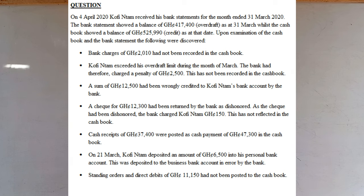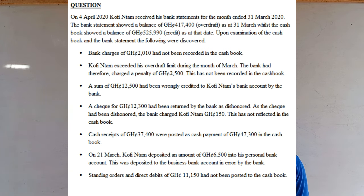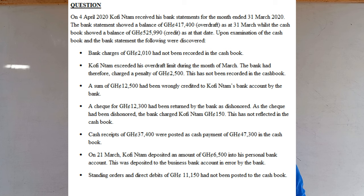Third, a sum of 12,500 had been wrongly credited to Kofintam's bank account by the bank. Then a check of 12,300 Ghana cedis had been returned by the bank as dishonoured. As the check had been dishonoured, the bank charged Kofintam 150 Ghana cedis. This has not reflected in the cash book.